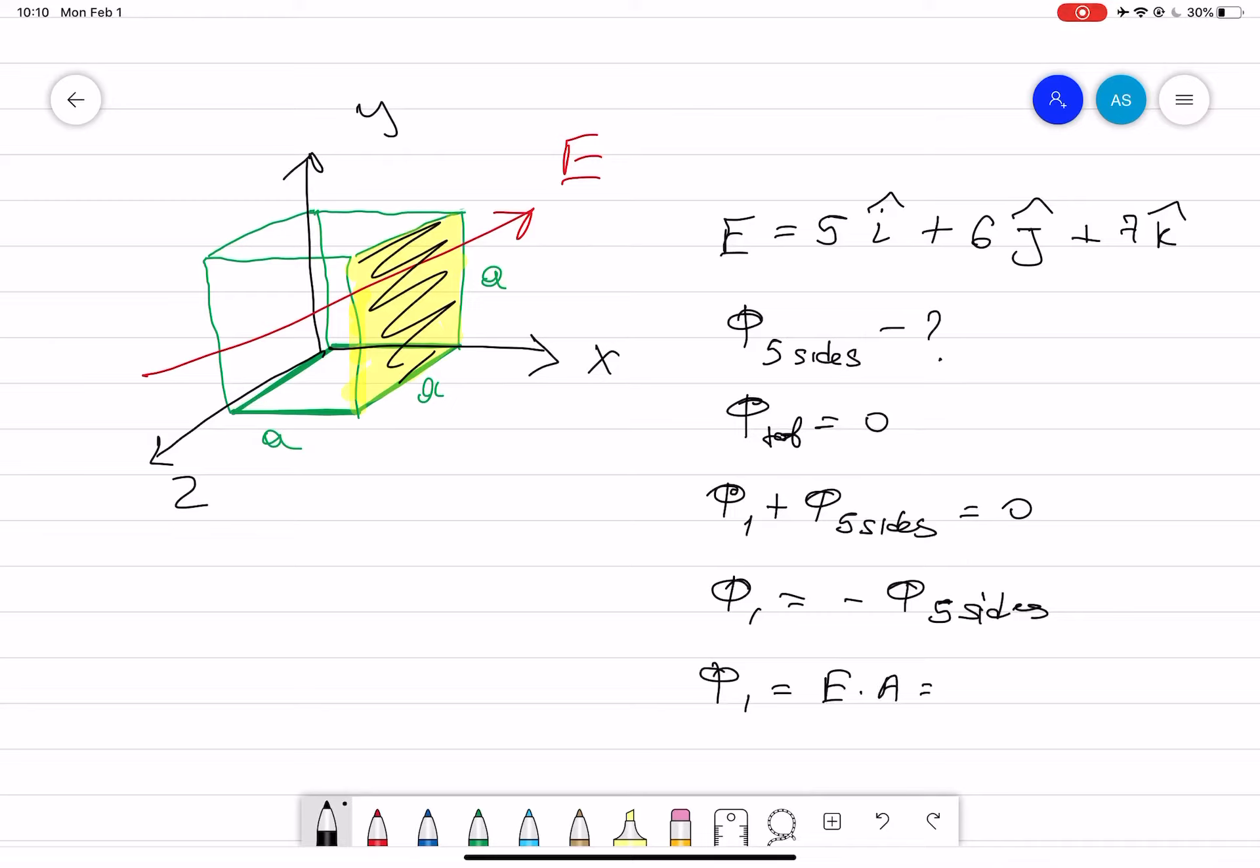Our area vector is pointing in the positive x direction, so that's i. The area vector is in the positive x direction. That means we can say 5i plus 6j plus 4k multiplied by a squared times the i vector.